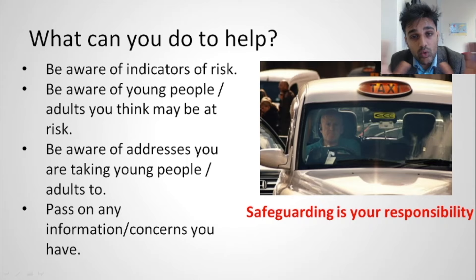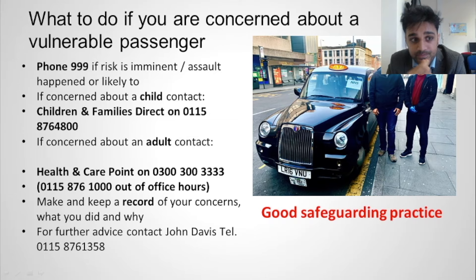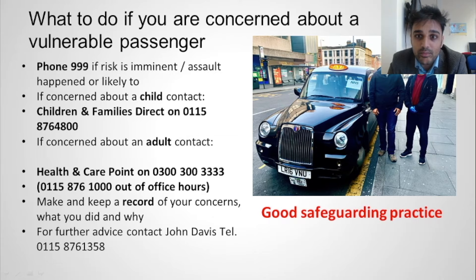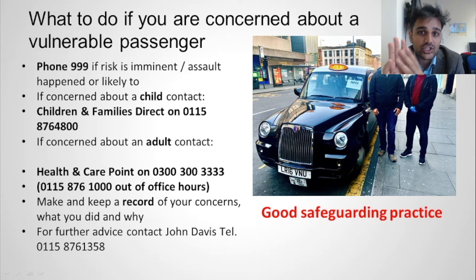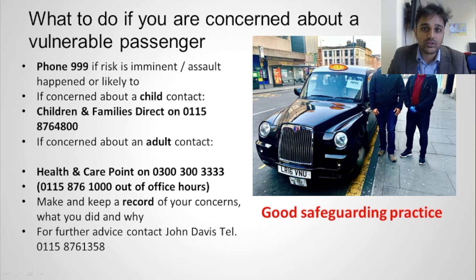What could you do to help? Be aware of all the risks discussed. Be aware of young people and adults who may be at risk and the addresses you are taking them to. What do you do if concerned about a vulnerable passenger? Phone 999. If concerned about a child, contact Children and Families Direct. If concerned about an adult, contact the Health and Care Point. There is MASH — the Multiple Agency Safeguarding Hub — for children. MASH can get to every child protection agency much faster than the police, and in these situations minutes can make a critical difference.